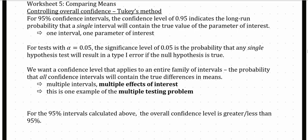If we build one interval there is one parameter of interest, such as the true mean difference mu 1 minus mu 2. For tests with alpha of 0.05, the significance level of 0.05 is the probability that any single hypothesis test will result in a type 1 error if the null hypothesis is true — that is, if there really is no difference between mu 1 and mu 2, the probability that our test results in claiming there is a difference is only 5%.